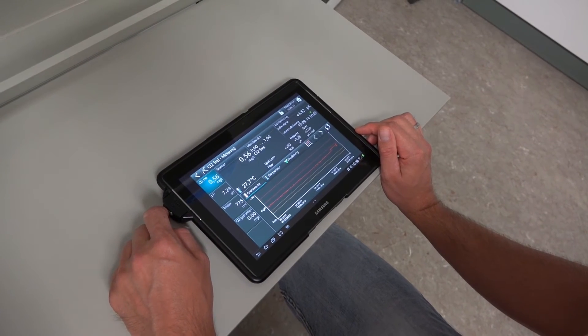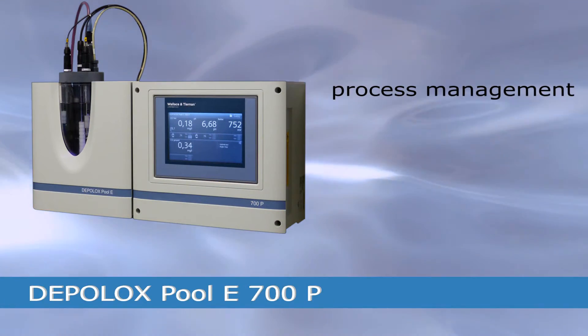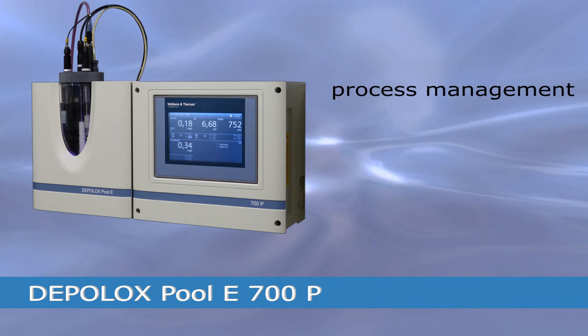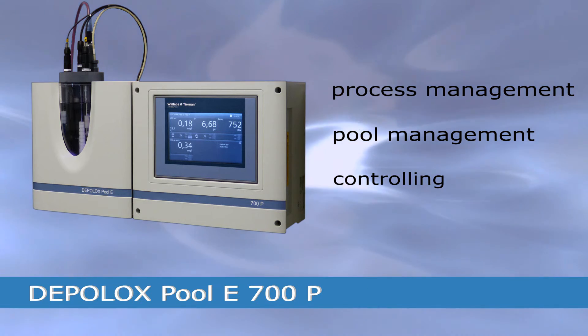That is a big relief and saves a great deal of time. Thanks to its comprehensive process management, the Depolox Pool E700P device takes over the entire management of your pool. It controls your pumps, electrolyzers or chlorinators and regulates most parameters automatically.